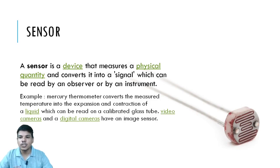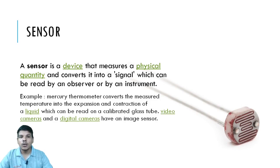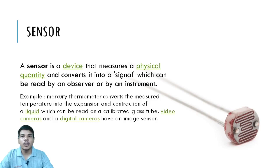To understand how a sensor works, take a mercury thermometer: it converts the measured temperature into the expansion and contraction of a liquid. If the temperature is high, the liquid expands; if low, it contracts — varying according to the temperature. By this expansion and contraction of the liquid, we can read the temperature value on the glass tube.